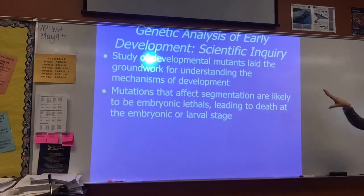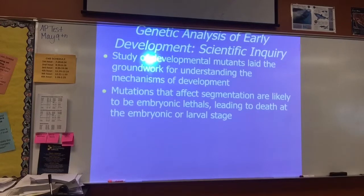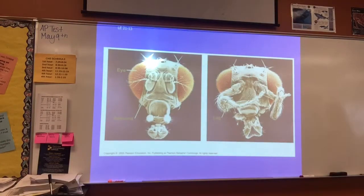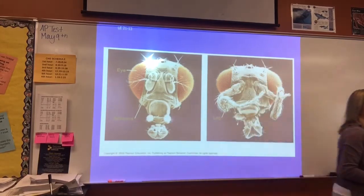In studying fruit flies, researchers studied developmental mutants — flies that developed wrong. Studying these developmental mutants laid the groundwork for understanding the mechanism of development. Mutations that affect segmentation are likely to be embryonic lethal, so usually the organism dies. But these mutations were really important for determining what genes did and what genes controlled the segments of the body. This picture shows the head of a fruit fly — the big red structures are the eyes. On the left is the wild-type fruit fly head showing normal development, and on the right is a mutant.